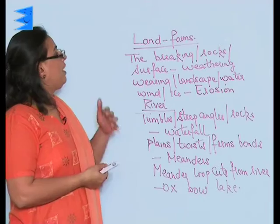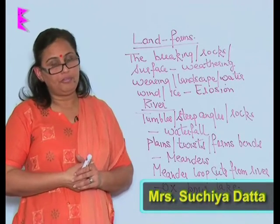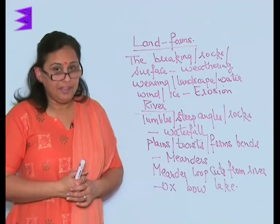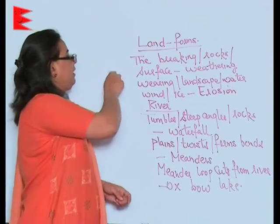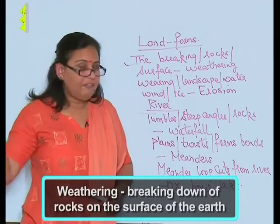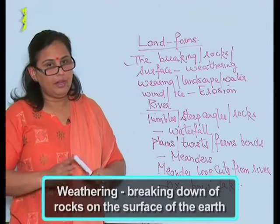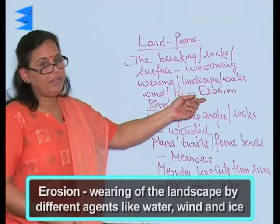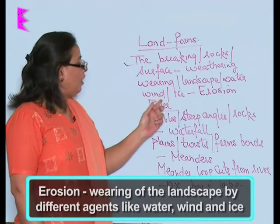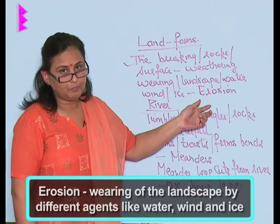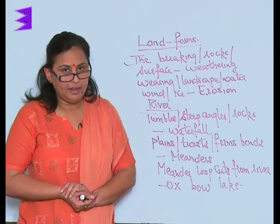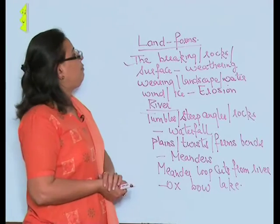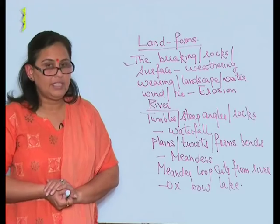The major landforms occur because of erosion and deposition. The two main processes affecting landforms are weathering and erosion. Weathering is the breaking down of rocks on the surface of the earth. Erosion is the wearing of the landscape by various agents like water, wind, and ice. Erosion and deposition are majorly responsible for the formation and changing of various landforms.